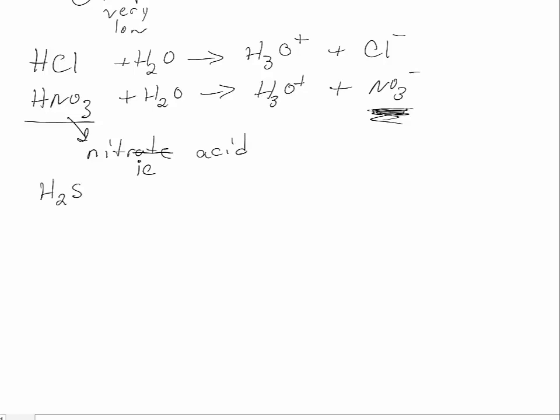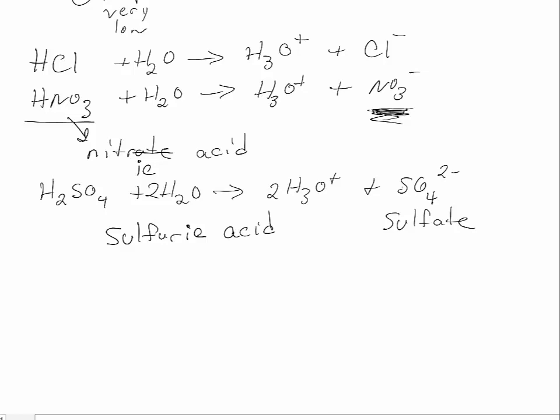Likewise, if you had something like H2SO4 reacting with water, this is going to make the sulfate ion. Because sulfate is based on sulfur, that -ur gets added back in. That -ate still turns into -ic. So this is now sulfuric acid.